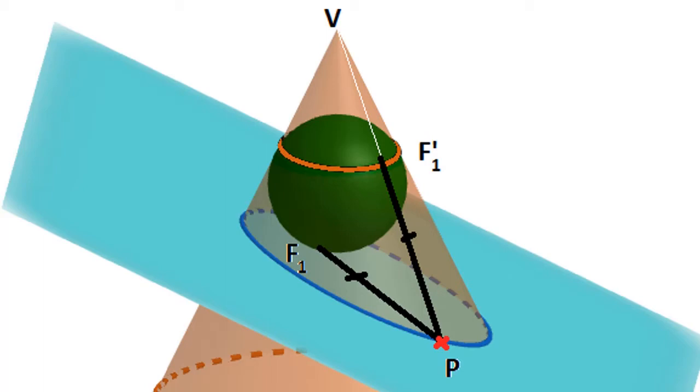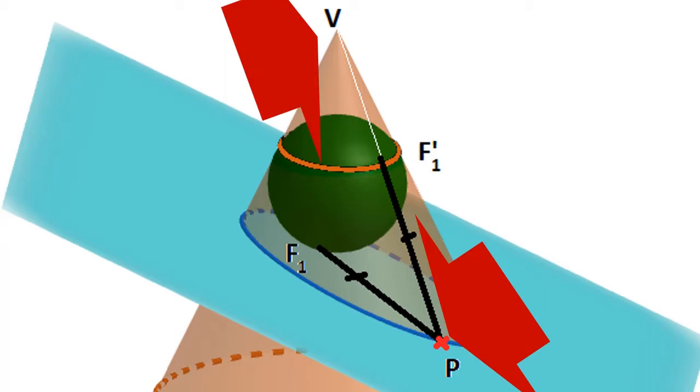The points of contact between the sphere and the cone form a horizontal circle. We can choose any point P along the ellipse and construct a line segment between that point and the vertex of the cone which we can call V.